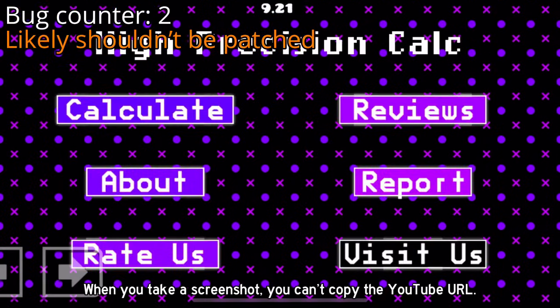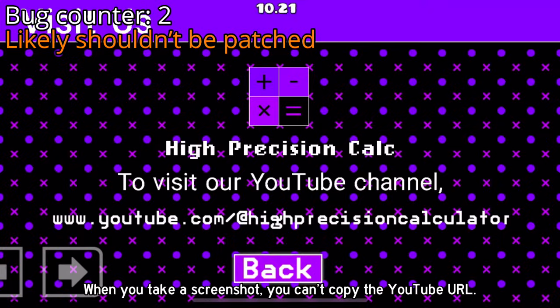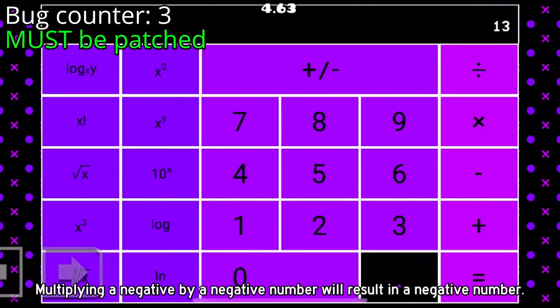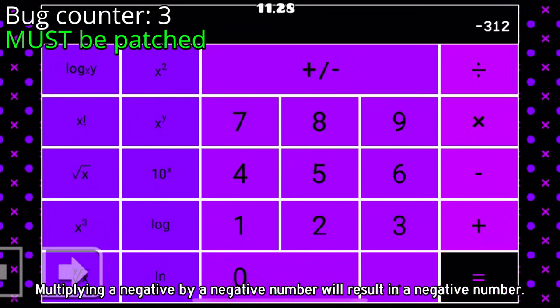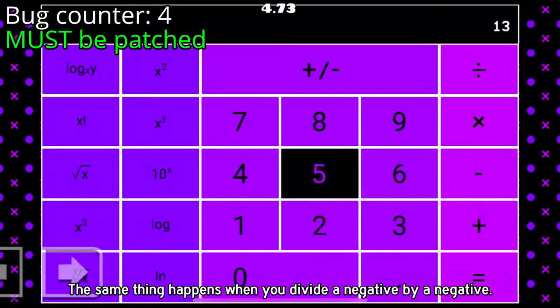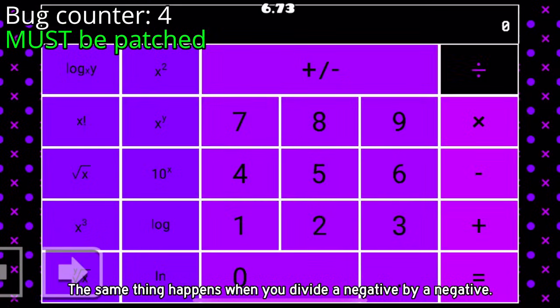When you take a screenshot, you can't copy the YouTube URL. Multiplying a negative by a negative number will result in a negative number. The same thing happens when you divide a negative by a negative.